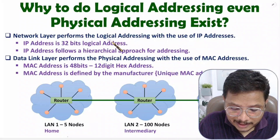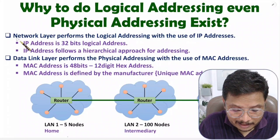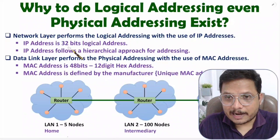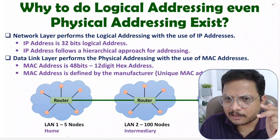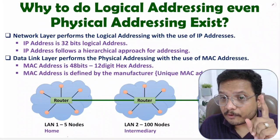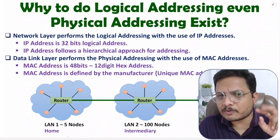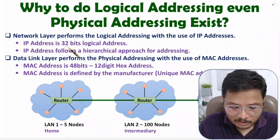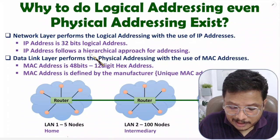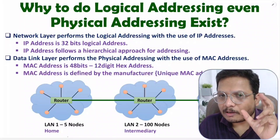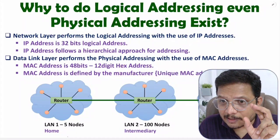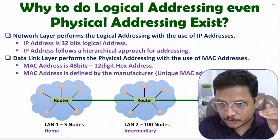Logical addressing is done with the usage of IP address, and it is done at the network layer. So the network layer performs logical addressing with the usage of IP address. IP address is of 32 bits — here I am considering IPv4. There are two types of IP address: IPv4 and IPv6. In majority of cases people use IPv4, which has a size of 32 bits. IP address follows a hierarchical approach for addressing.